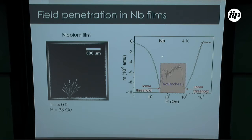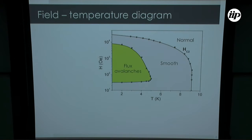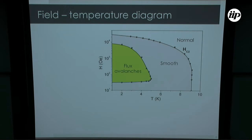This curve is for a temperature of 4K for this niobium film. If we perform this measurement for different temperatures and collect these two threshold fields, we are able to build this field-temperature diagram. The lower threshold field is this line and the upper threshold field is the upper line. In this green region of the diagram, we have those discontinuities in the measurements.